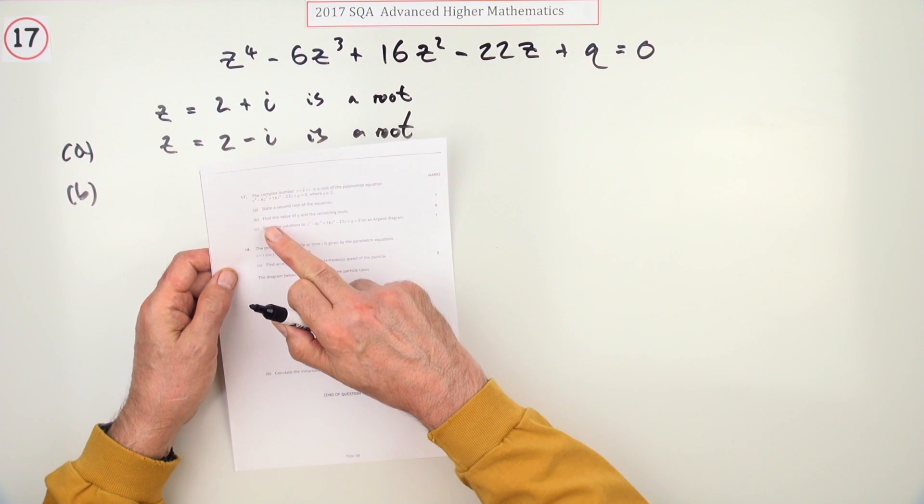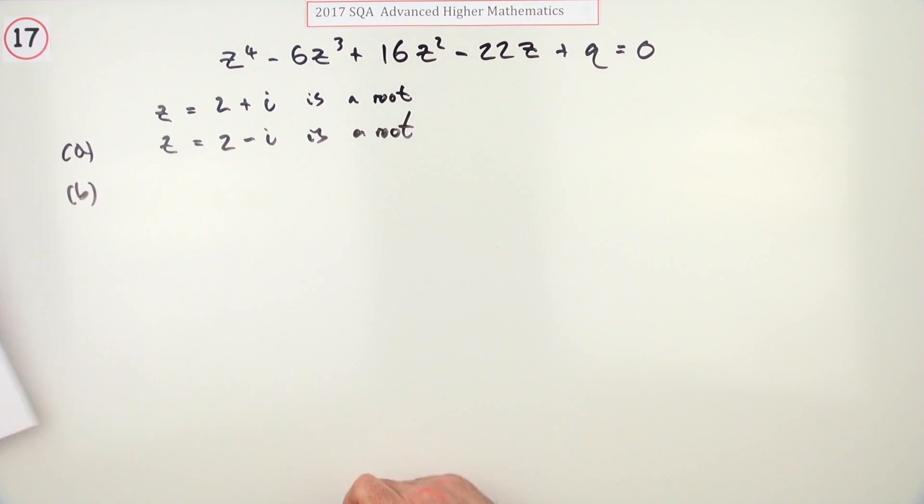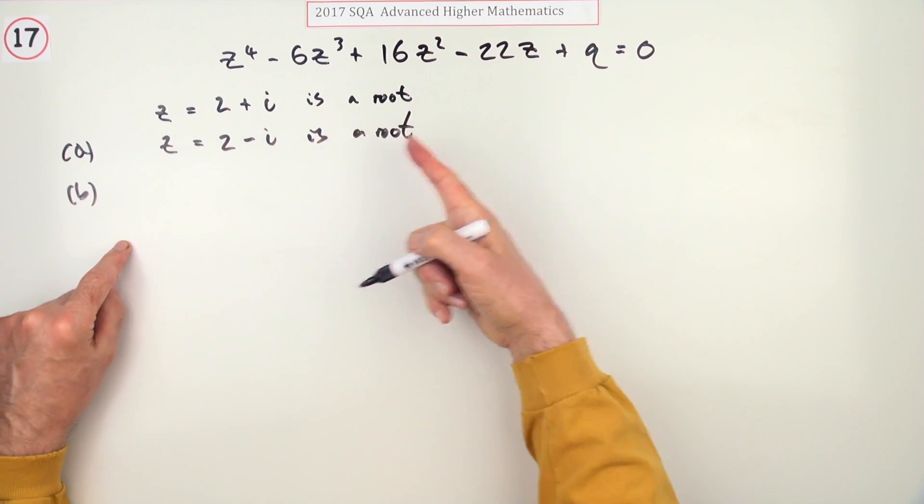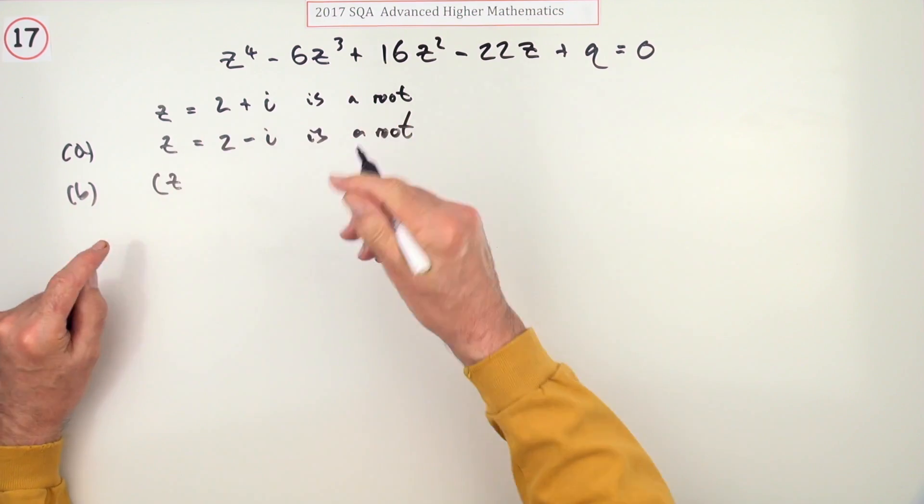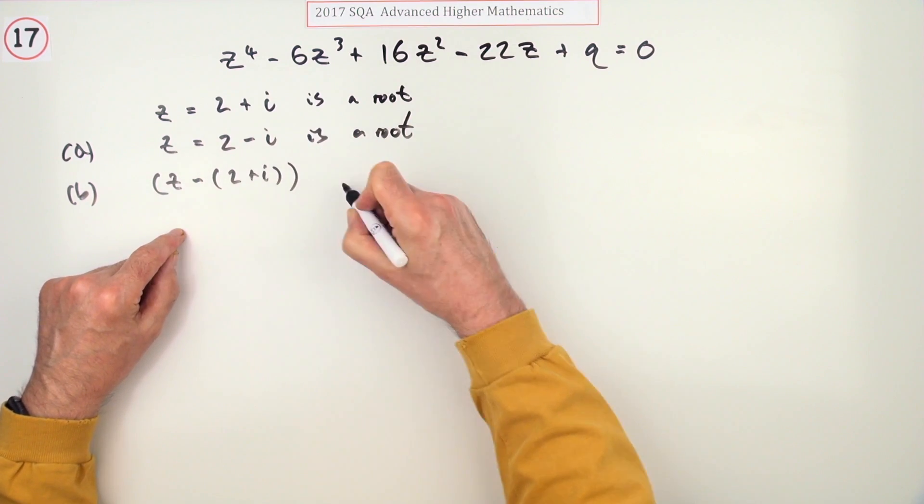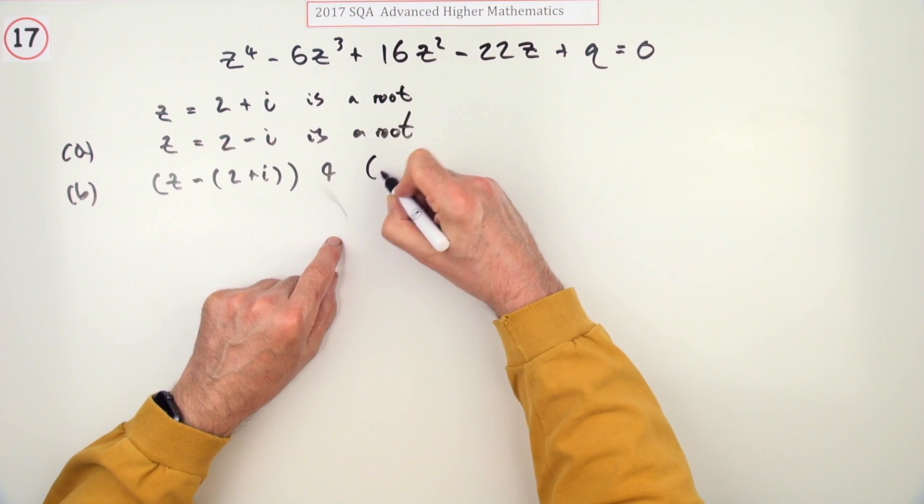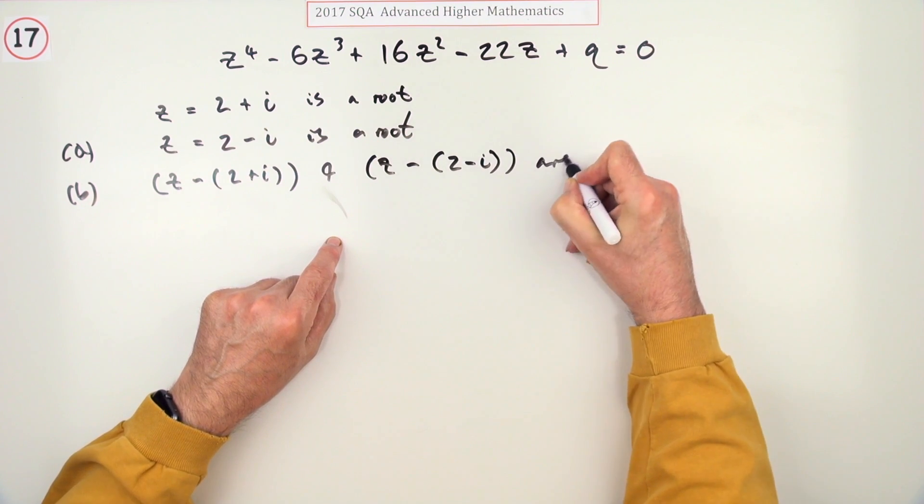Now part (b): find the value of q, the unknown coefficient at the end, and the remaining roots—six marks. If you know these two roots, you can reconstruct their factors. That means z - (2 + i) and z - (2 - i) are factors.